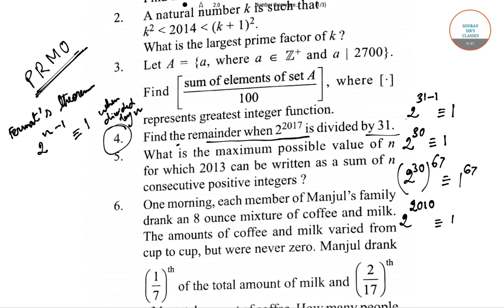Now if we move from 2 to the power 2010 towards 2 to the power 2017, we multiply both sides by 2 to the power 7. The left side becomes 2 to the power 2017, and the remainder side becomes 2 to the power 7. So when 2 to the power 2017 is divided by 31, we get a remainder of 2 to the power 7.